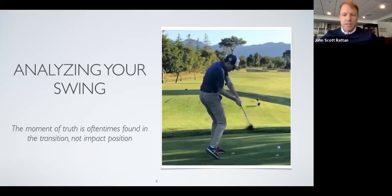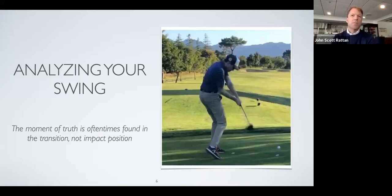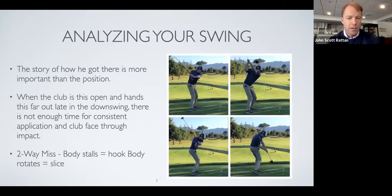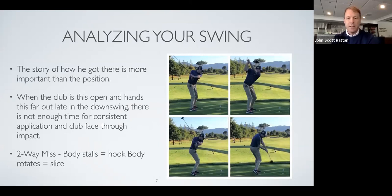This is an example of a still frame not telling the whole picture. The moment of truth is found in the transition, not at impact. For Jason's swing, what stands out to me is how open the club face is late in the downswing. When I see that, it's going to create a two-way miss — if his body stalls he'll hook it, and if his body rotates he'll slice it. That's really hard to time out if you're not playing every day.